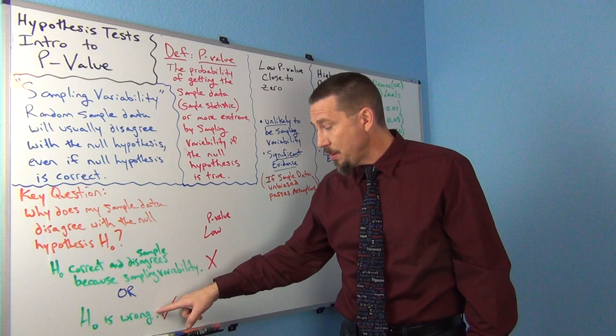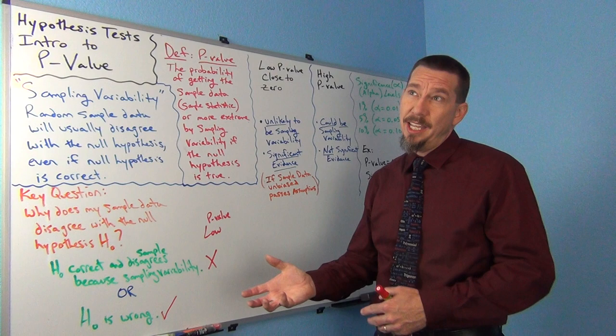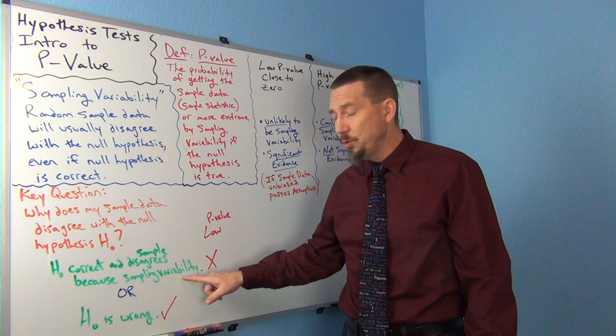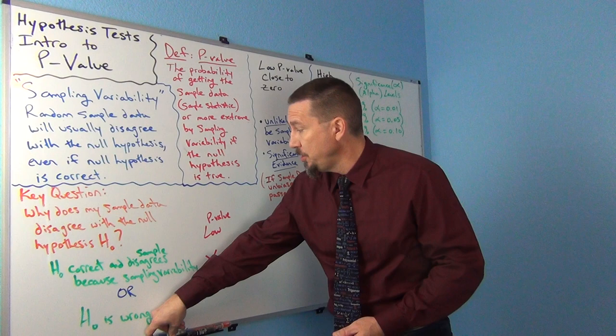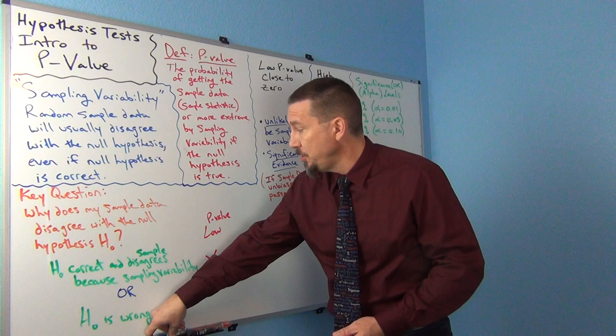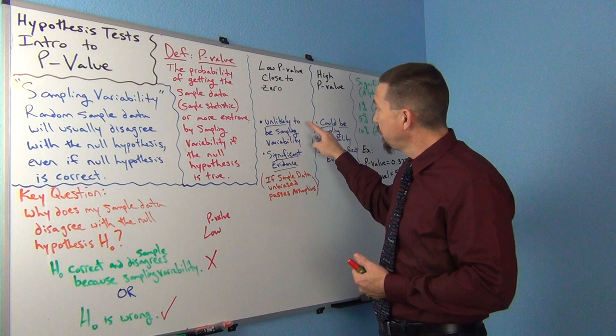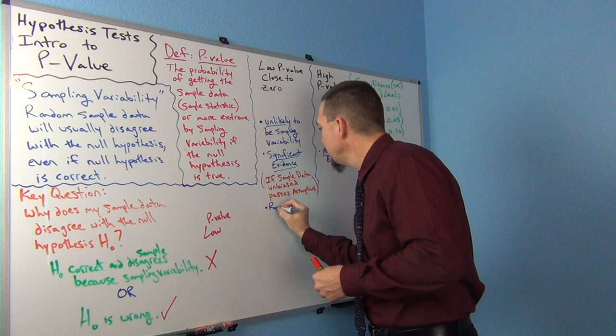Now, we don't know anything for sure — we're still looking at sample data trying to say something about millions of people in the population, and you can make mistakes in this stuff. But the idea of p-value is that idea of ruling out random chance or sampling variability. So a low p-value indicates the null hypothesis is probably not correct — that's why when we have a low p-value, we reject the null hypothesis.